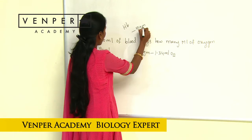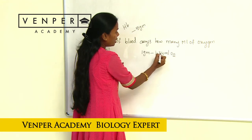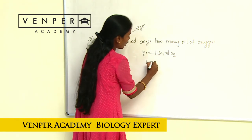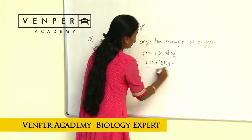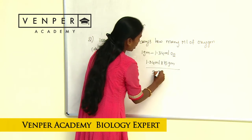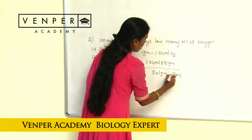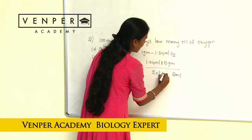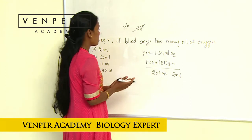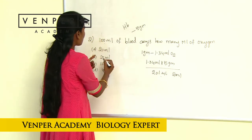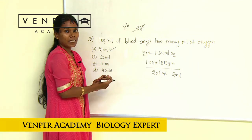We have 15 grams of HB in 100 ml of blood. So now 1.34 ml multiplied by 15 grams — we will get the value around 20.1, which is approximately 20 ml. So 100 ml of blood carries 20 ml of oxygen. When it comes to our options — 20, 25, 15, and 40 — we can go for option A. Option A is the correct answer.